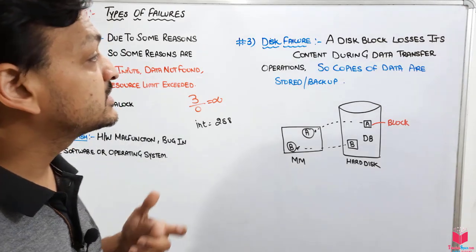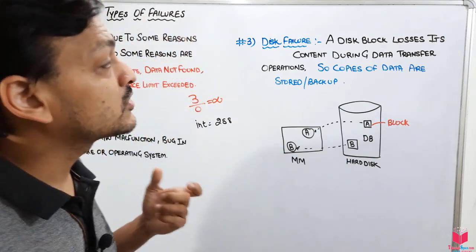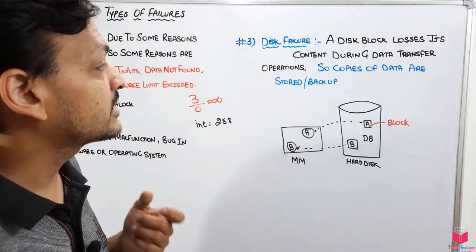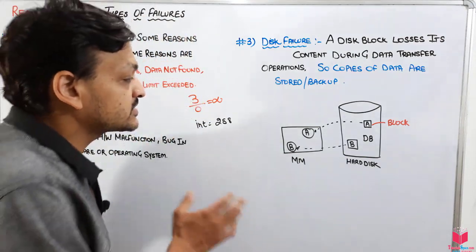Third is the disk failure. A disk failure is when a disk block loses its content during data transfer operations.